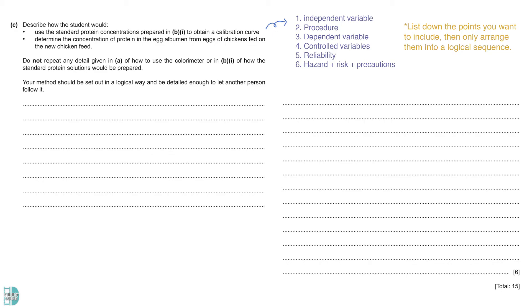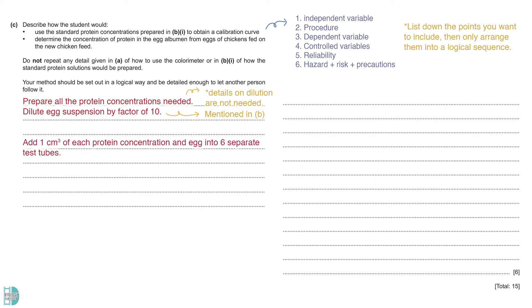Firstly, prepare all the protein concentrations needed. Then, dilute the egg suspension by a factor of 10. We have to do this as the question mentioned in part B that the egg sample must be diluted to be used in a Burette assay. Add 1 cm³ of each protein concentration and egg into 6 separate test tubes. After that, add 1 cm³ of Burette solution into all of the test tubes.